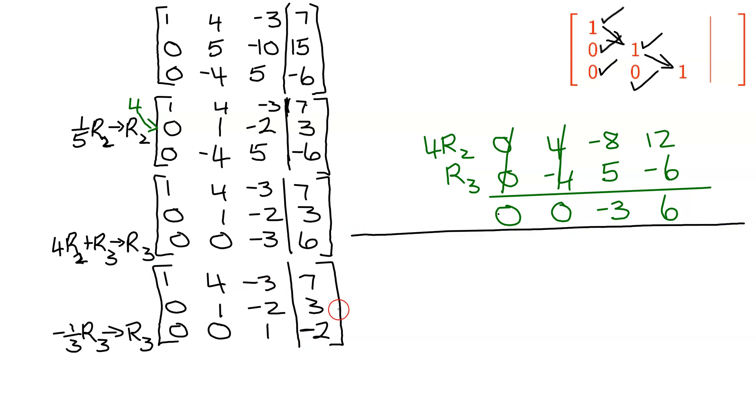So I'm going to write my equations. Remember, x, y, z's equals constants. So I have x plus 4y minus 3z equals 7. Second one, no x, 1y, so just y minus 2z equals 3. Last row, no x, no y, 1z or just z equals negative 2.